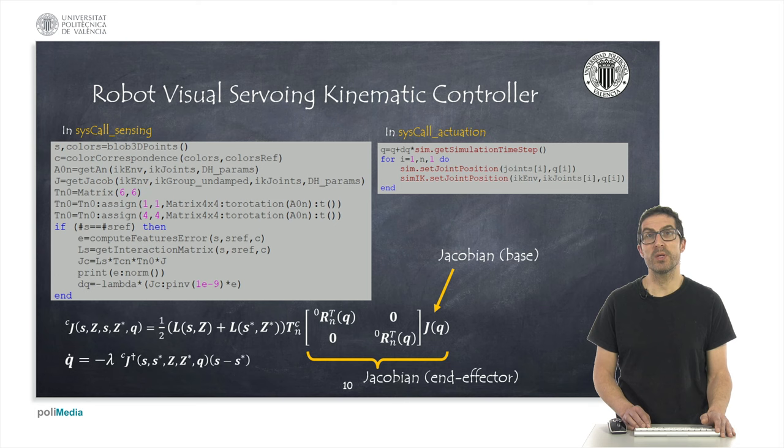we must compute as well the transformation between the end effector and the camera. This transformation is constant and can be done in the initialization of your script, and therefore, it can be just simply computed once.